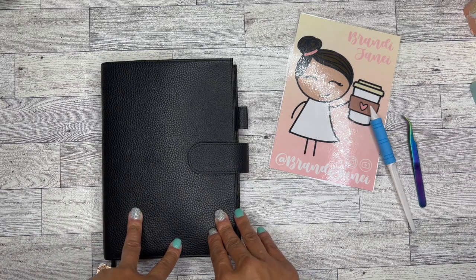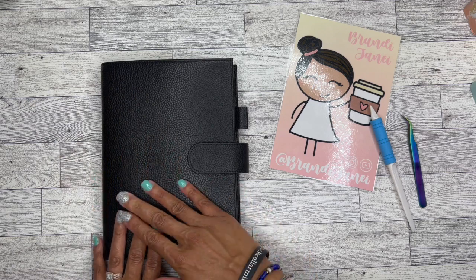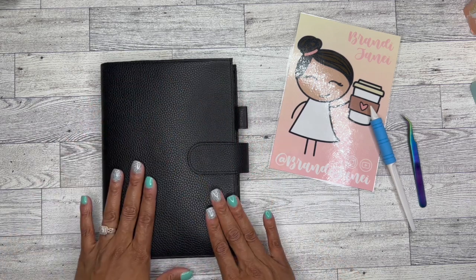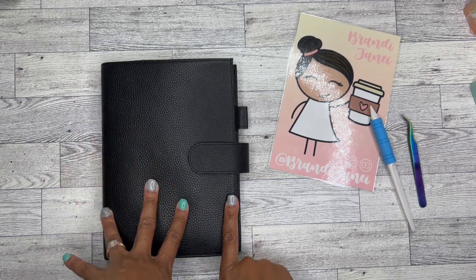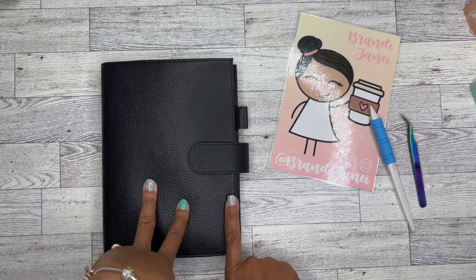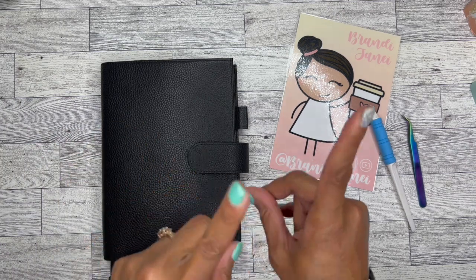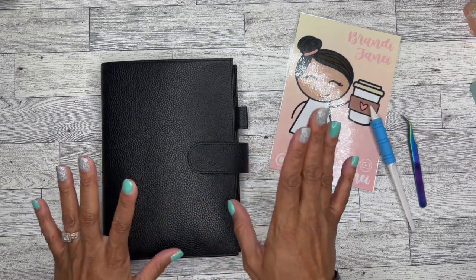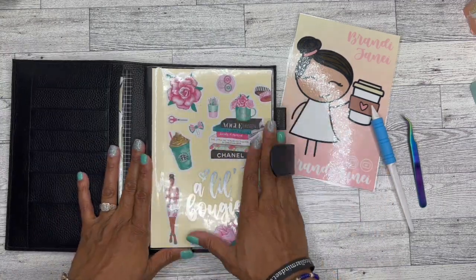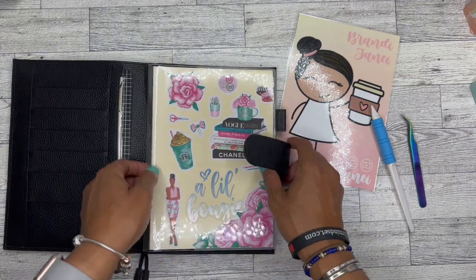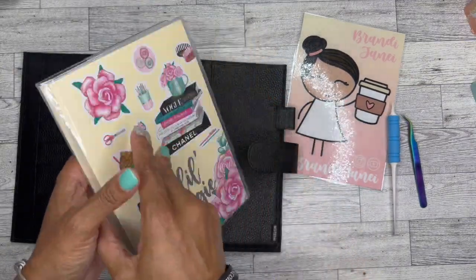Thank you so much again for tuning in with me today. Like I said, I have my Hobonichi Cousin in this beautiful Moterm planner cover. So if you missed my part one setup, please be sure to go and check that out. I will try to remember to link it in the cards above. I have this beautiful black Moterm cover and this is what I did so far. I set up the front, I did the back and I absolutely love it.